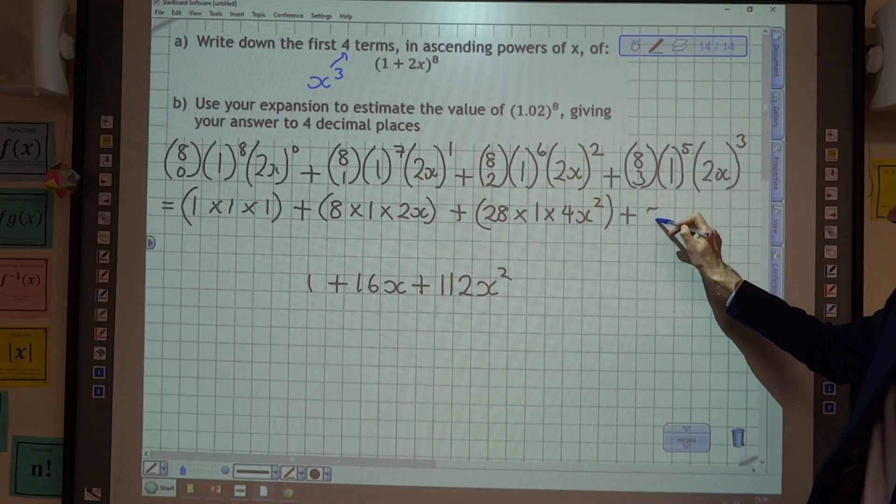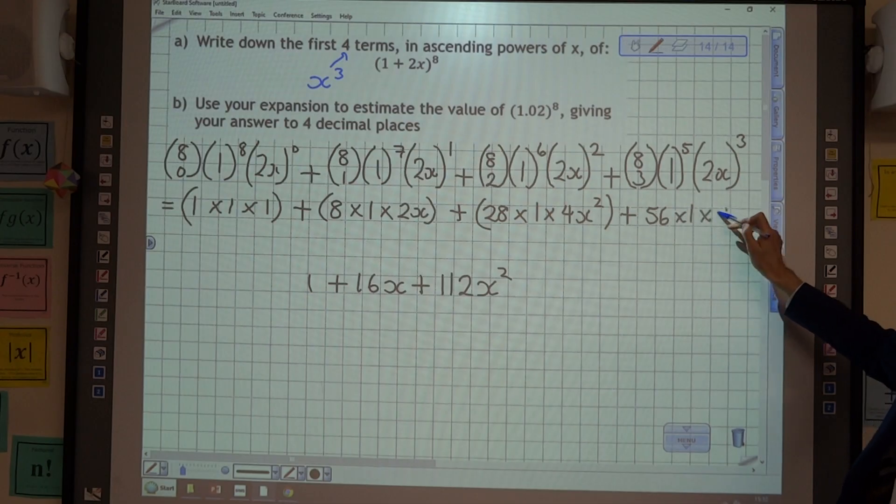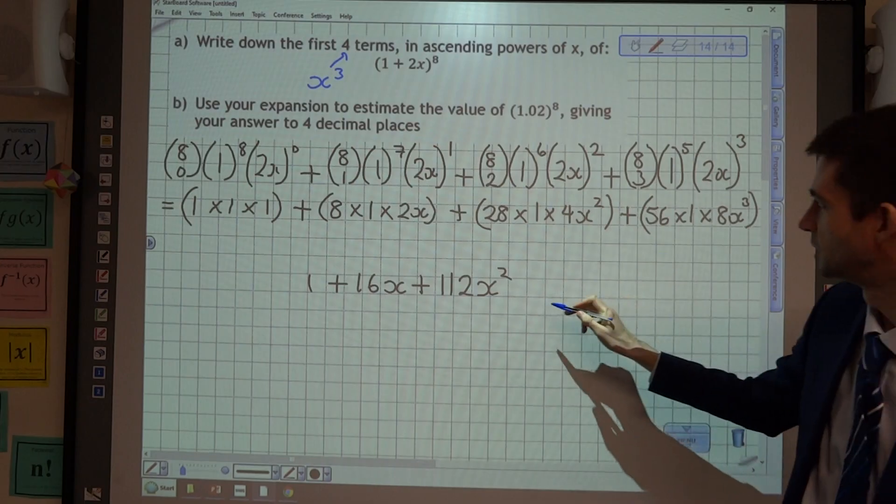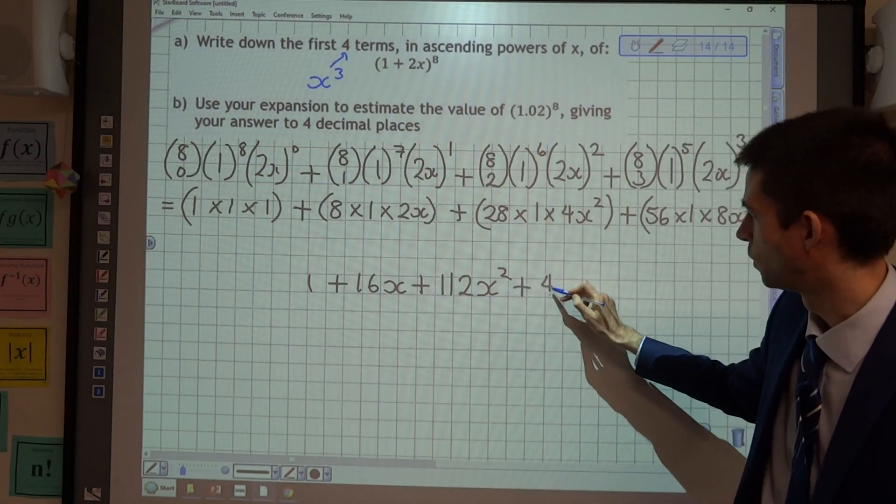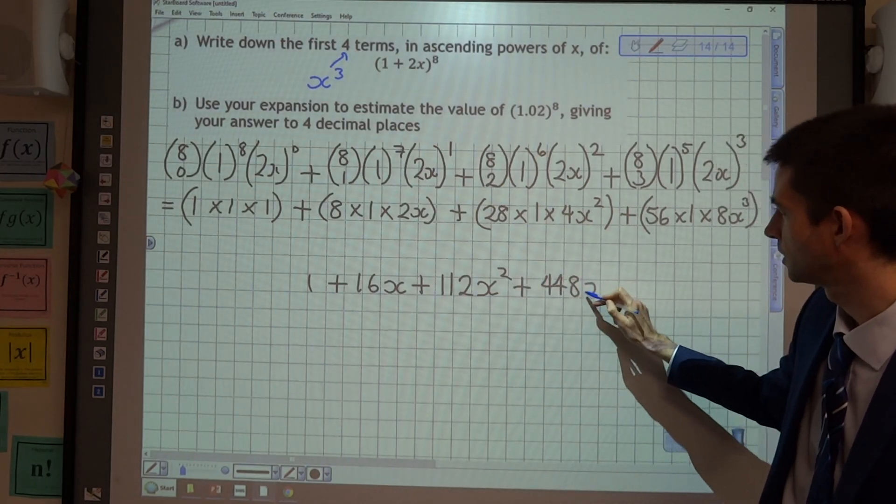Finally, 8 choose 3 is 56, multiplied by 1, multiplied by 8x cubed, because we are cubing the 2. And that is 448x cubed.